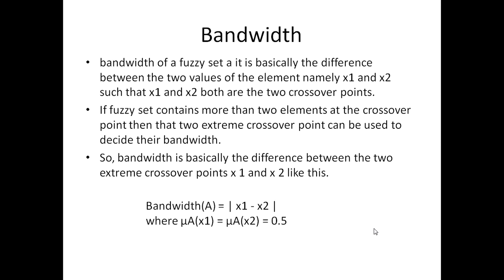The next terminology is bandwidth. How we calculate bandwidth — we have earlier learned about crossover points. Bandwidth represents all the values that the crossover points contain. It is the difference between two values of elements: say we have two elements X1 and X2 that are the two crossover points. We get their values and find the difference between them — that will be the bandwidth. It is possible that at a particular moment there could be more than one element at a crossover point. In that case, we take the extreme crossover points and decide the bandwidth as the difference between those two extreme crossover points X1 and X2.